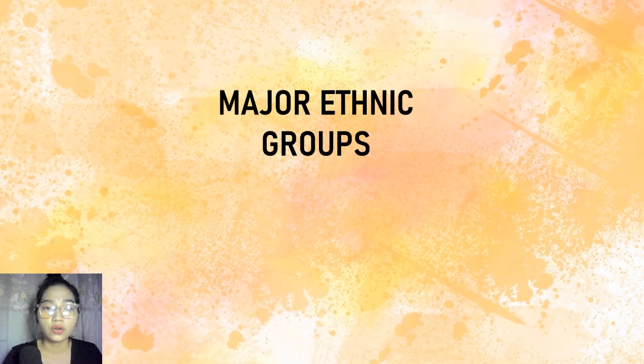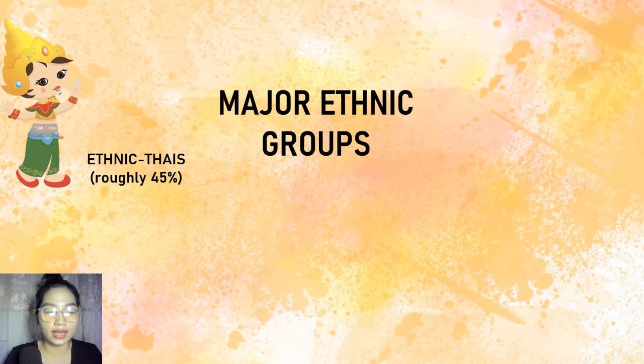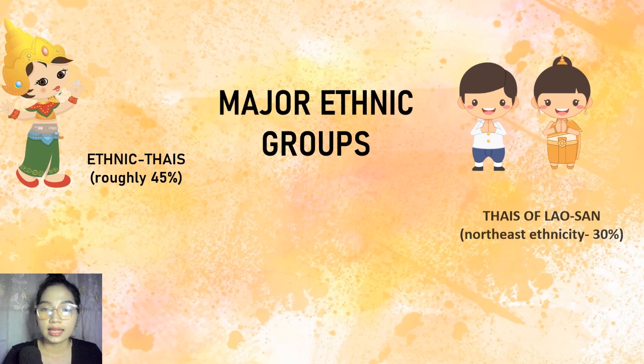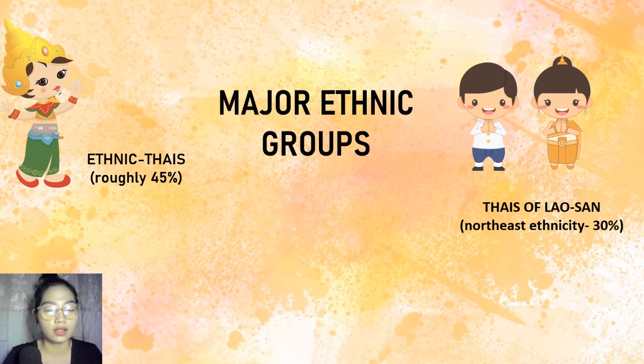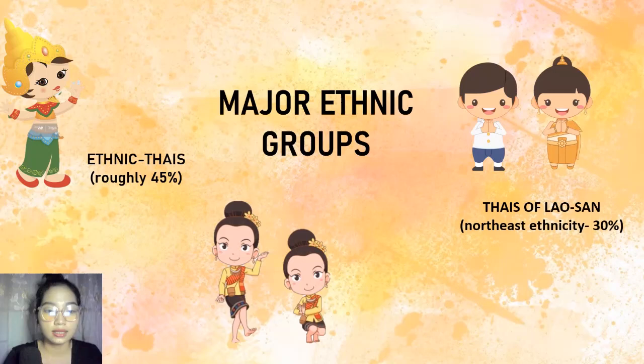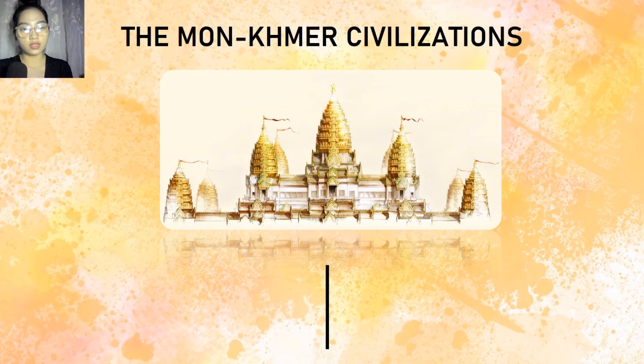The three major groups are: ethnic Thais at roughly 45 percent, Thai-Laosans located in the northeast at 30 percent, and Sino-Thais at roughly 15 percent of the population. From the 9th to 11th century, the central and western area of Thailand was occupied by a Mon civilization called Dvaravati.